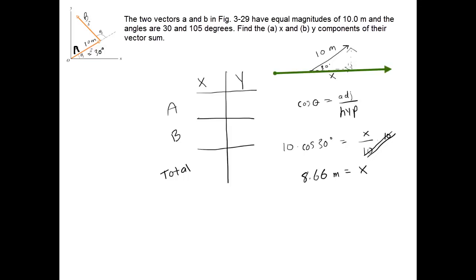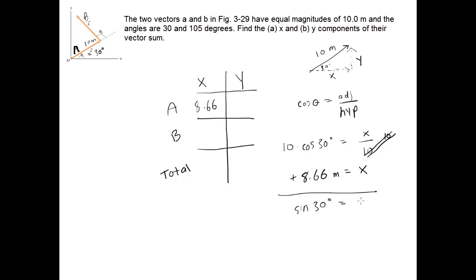Looking back at the figure, the x component is pointing to the right, meaning it's a positive value. Had it pointed to the left it would have been negative 8.66, but here we plug in positive 8.66 into our table. For the y component, it represents the opposite side to our 30 degree angle, so we use the sine function. Sine of 30 degrees equals opposite over hypotenuse. The y component also points upward, so it's positive. Plugging 10 sine of 30 into a calculator gives 5, so we enter positive 5 into the table.